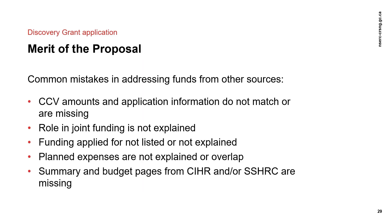Here are some final tips based on common mistakes in the relationship to other research support sections. Ensure that CCV amounts and application information match and that nothing is missing from either. Be sure to clearly explain your role in any joint funding. If you have funding under review, be sure to list it in your CCV but also explain that it is still under review. Your planned expenses need to be explained, and for CIHR and SHRC plans it needs to be clear that they are distinct with no overlap. Be sure to attach the budget and summary pages from any SHRC and CIHR funding held or applied for.